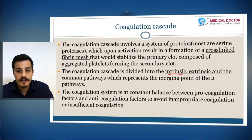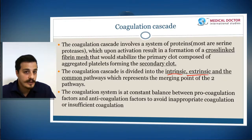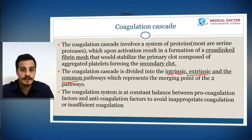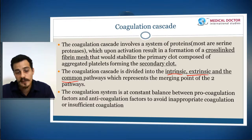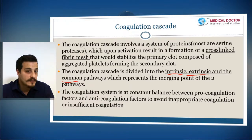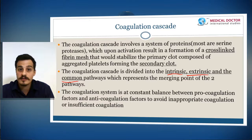The activation of the coagulation cascade can be separated into two pathways: the intrinsic and the extrinsic, both of which meet at a common pathway. The coagulation system must be in constant balance to avoid a hypercoagulative state leading to inappropriate thrombi formation, while remaining ready to coagulate in case of injury. There is a constant balance between procoagulation and anticoagulation factors to reach hemostasis.